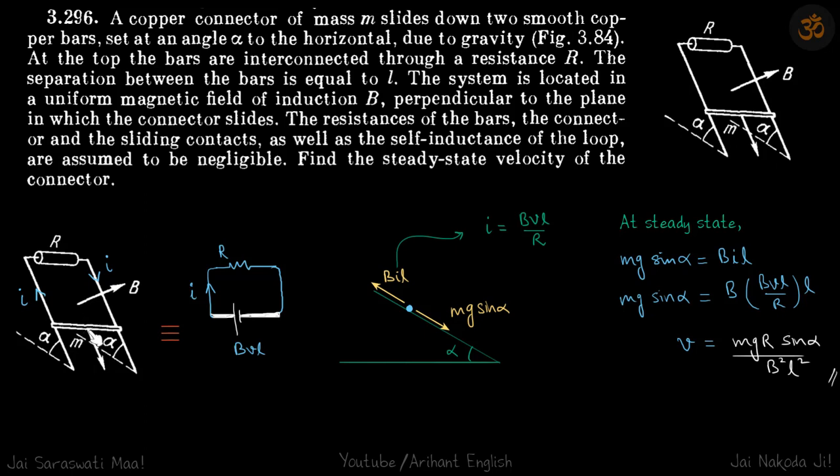First, when the rod goes down, the flux inside the loop is increasing. To counter that, current will flow in the clockwise direction. So on the rod, the current will also be in this direction, towards the left.